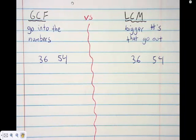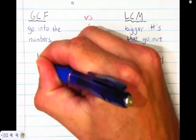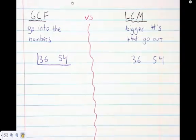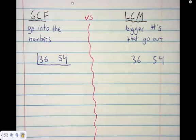It has to be smaller than these numbers - it goes into them. The LCM is going to be the opposite: it's going to have to be at least bigger than 36. To do a step diagram, you make it look like a step underneath.